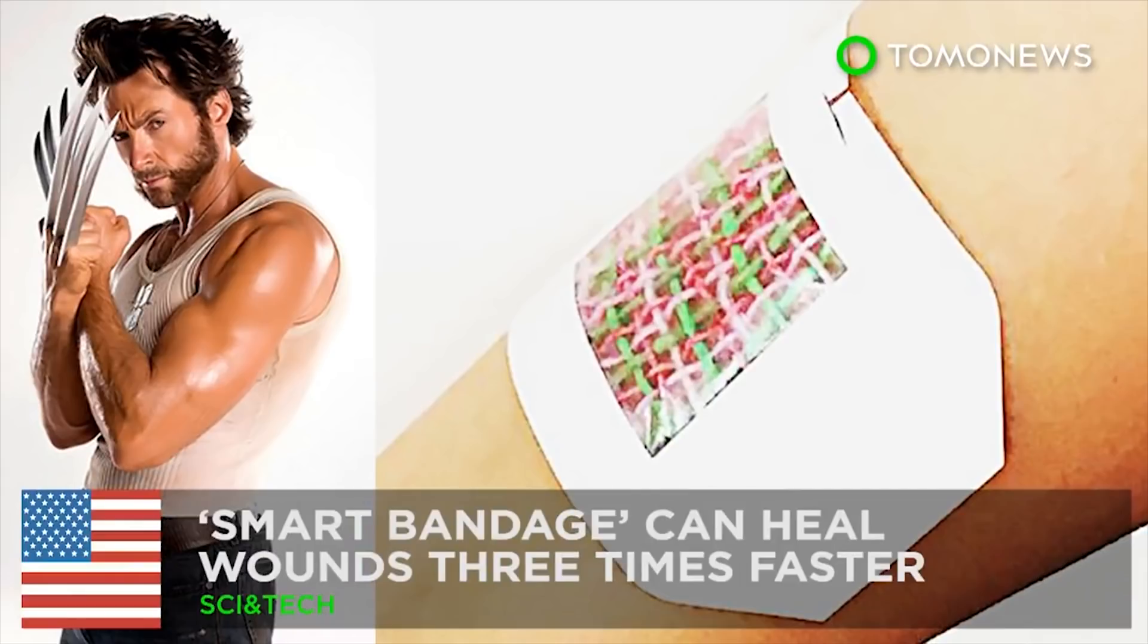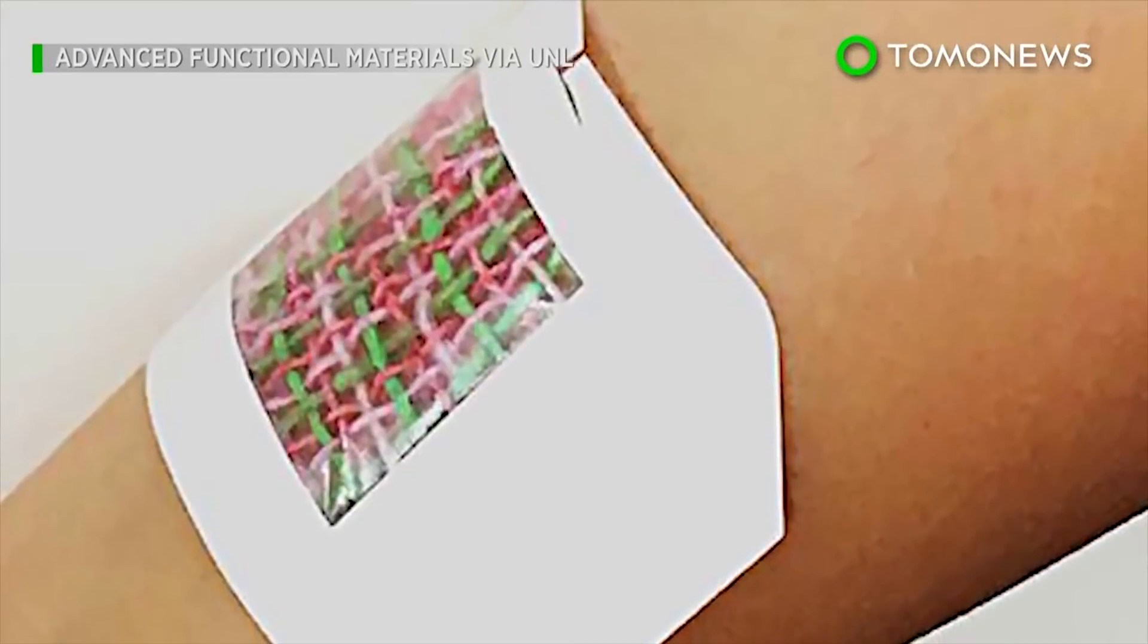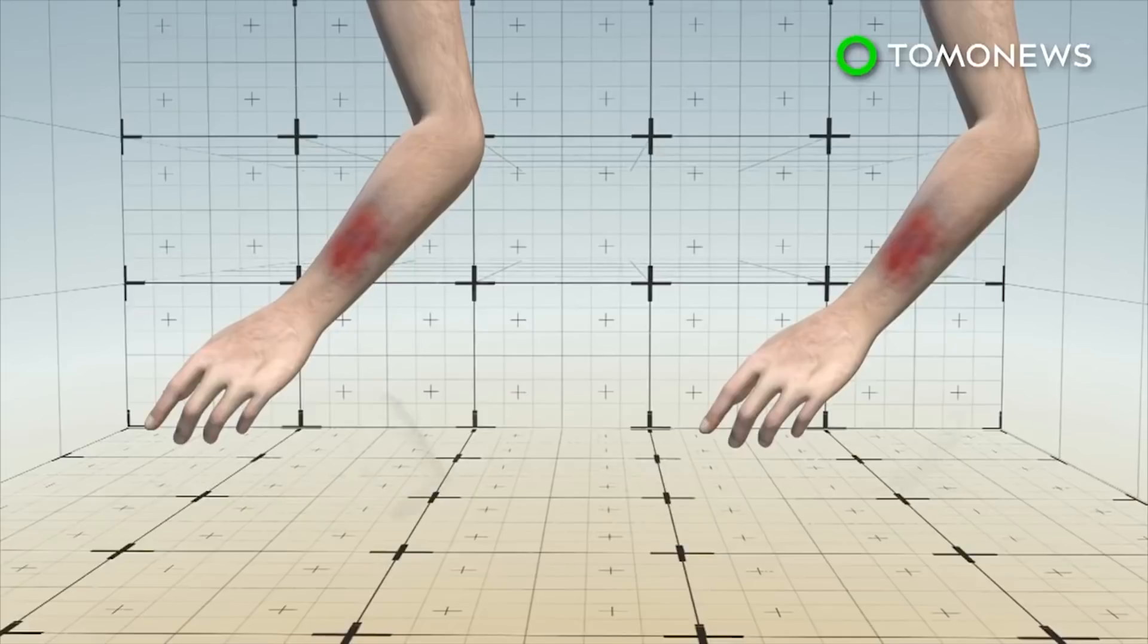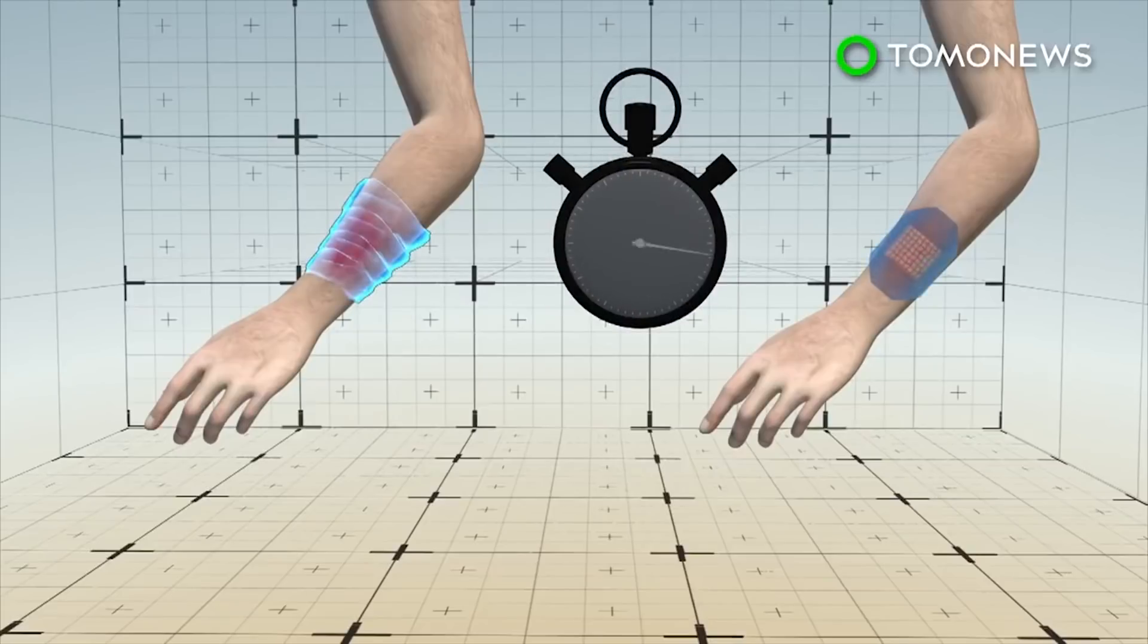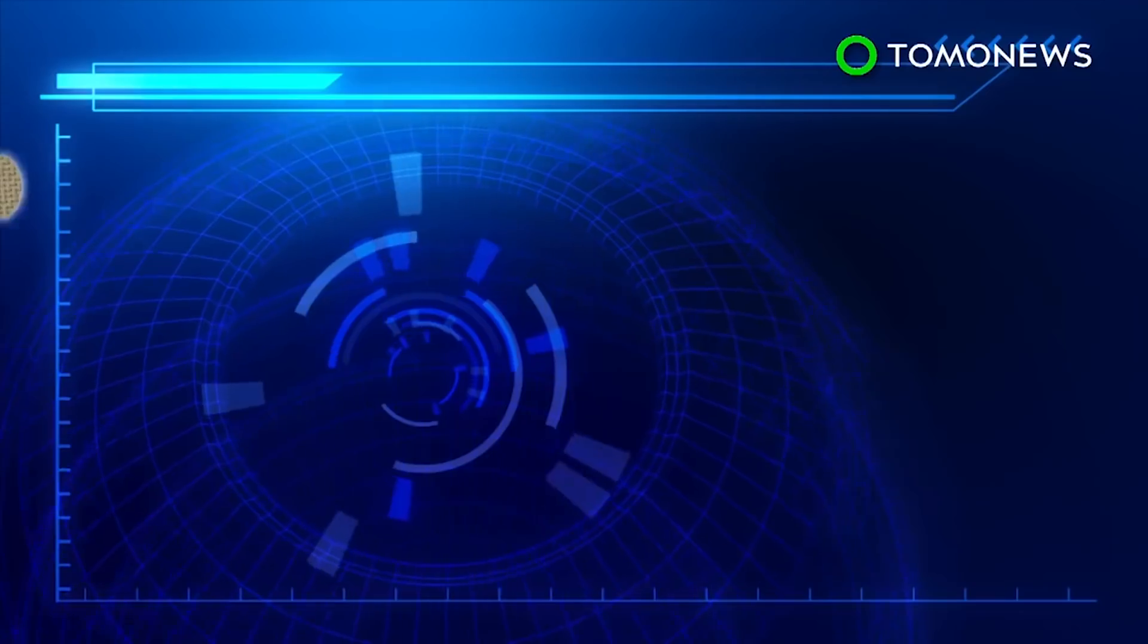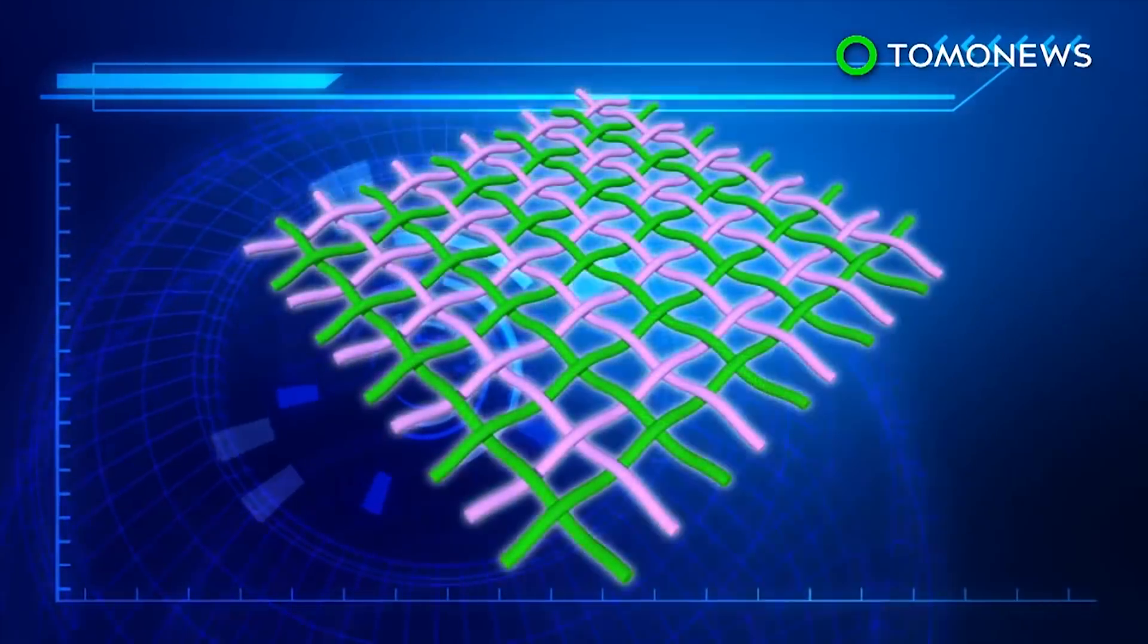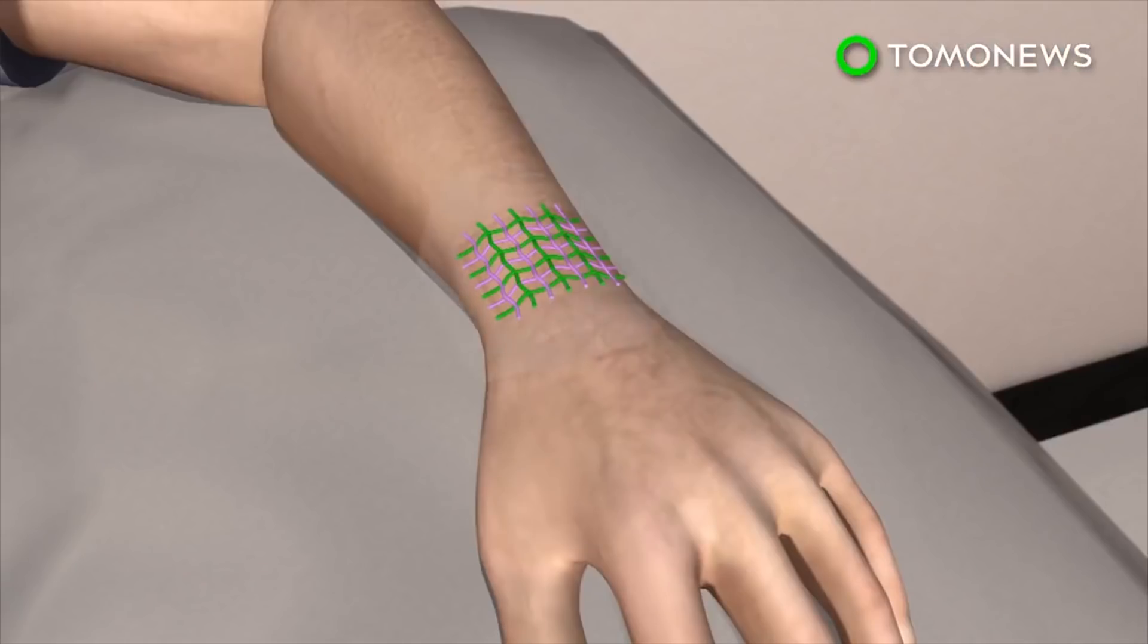This smart bandage will help you heal like Wolverine. Mad medical tech coming out of the U.S. this month could put a wrap on bandages as we know them. Researchers have designed a smart bandage they say heals skin tissue three times faster than a regular medical dressing. It accomplishes this via medication loaded inside the bandage threads. Drug delivery can then be controlled via smartphone.